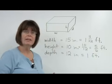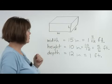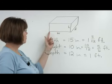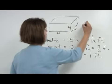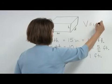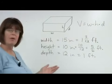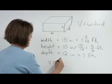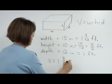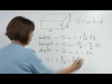When we're calculating the volume of a rectangular prism like this, we multiply width times height times depth, the three measurements. So to find the volume of this object, we would need to multiply 1 and 3 twelfths times 5 sixths times 1.